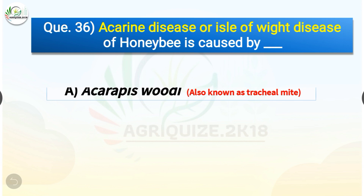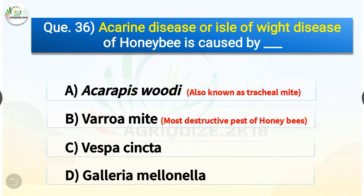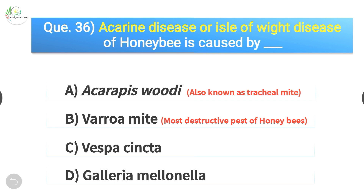Question number thirty-six: Acarine disease or Isle of Wight disease of honeybee is caused by which of the following? The options are: Acarapis woodi, Varroa mite, Vespa cincta, or Galleria mellonella. The correct answer is option A — Acarapis woodi, also known as the tracheal mite. Varroa mite is the most destructive pest of honeybees.